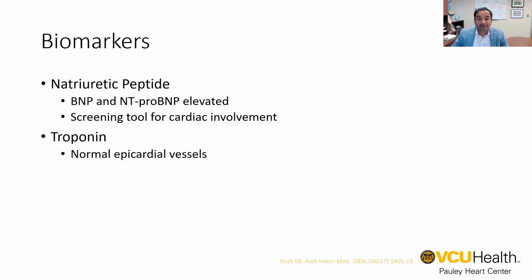Amyloid patients also tend to have elevated biomarkers. B-type natriuretic peptide — either BNP or aminoterminal pro-BNP — are often elevated. It's a screening tool for cardiac disease and heart failure and is followed for prognosis in amyloid patients. Troponin concentrations in the blood, which are typically elevated in the setting of a myocardial infarction or myocarditis, can chronically be elevated in severe amyloid patients who have no coronary disease — it's simply because of myocyte destruction. Both of these markers are used clinically for serial follow-up to assess treatment response and prognosis.